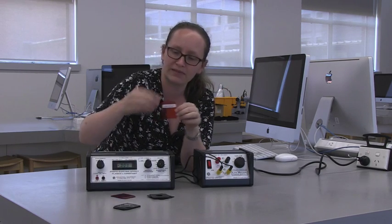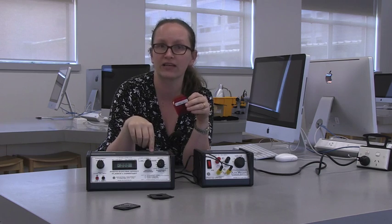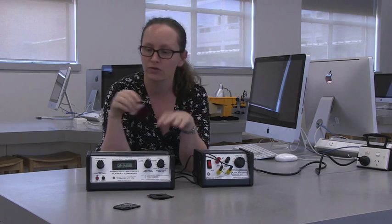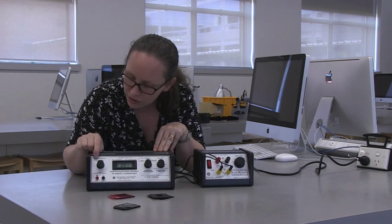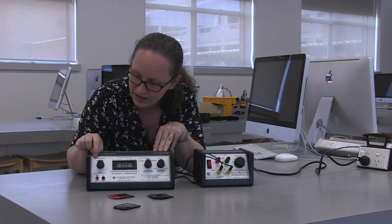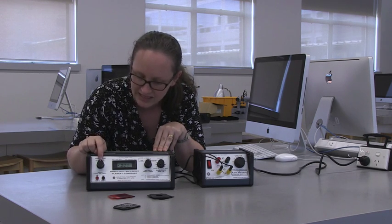In the next part of the experiment, you'll be changing the different coloured filters so that you're changing the frequency of the light which is reaching the photoelectric box. Throughout this experiment, you should have this switch here set to experiment 1A to E.